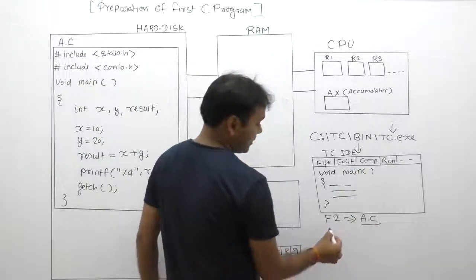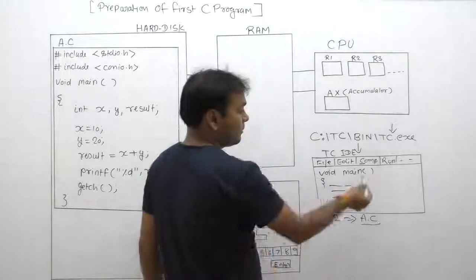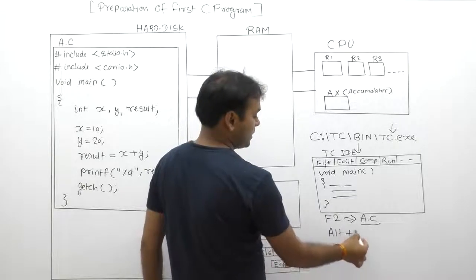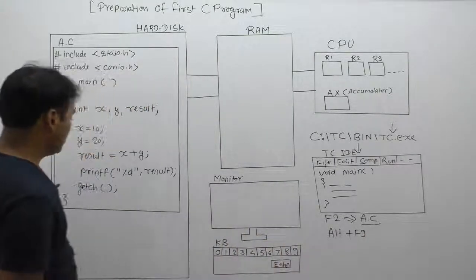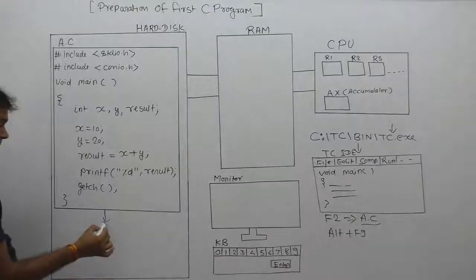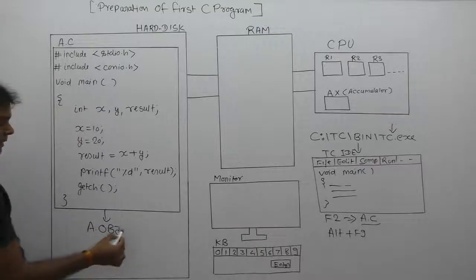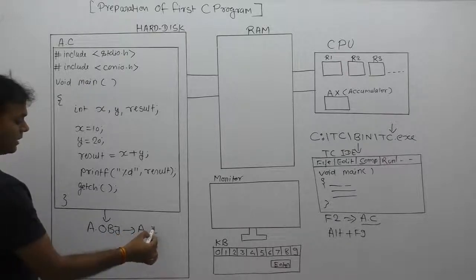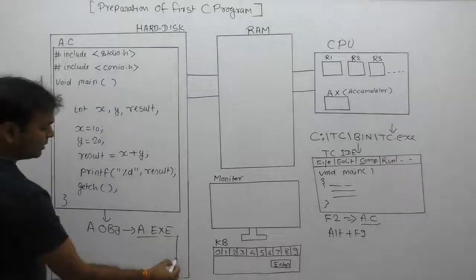After writing the source code, the next step is compilation. For compilation, use the Compile menu directly, or use the shortcut key Alt+F9 or Ctrl+F9. After compilation, a file called a.obj is created, and at the same time linking is performed, which creates one more file called a.exe.